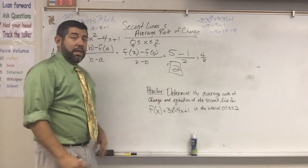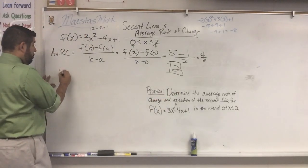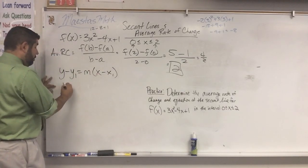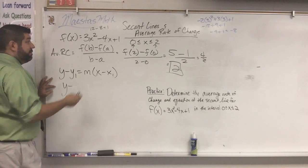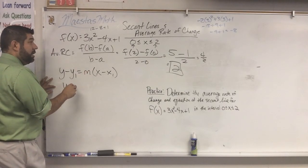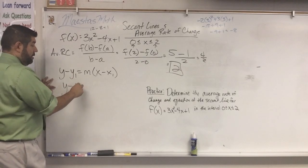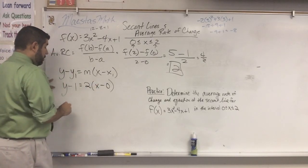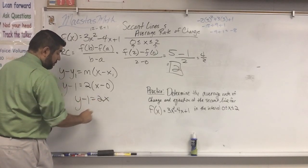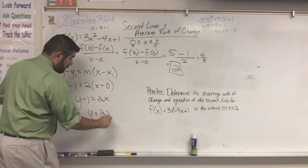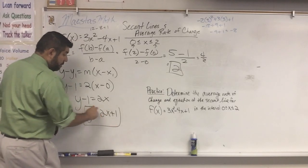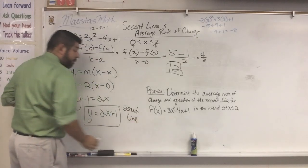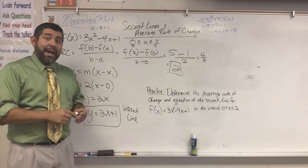Now we're going to find the equation of our secant line using y minus y1 equals m times x minus x1. Using f of zero, y1 is one. M is two, and x1 is zero. So the equation simplifies to y equals two x plus one. That's our equation of the secant line. All right, folks — secant lines and average rate of change. Let me know in the comment section if you have anything else you want to look at, and we'll see you next time.